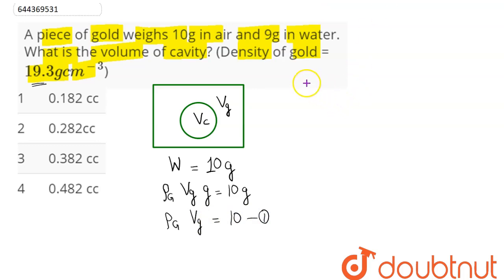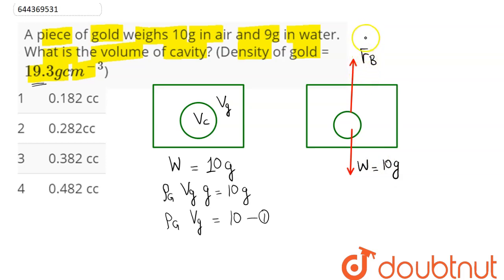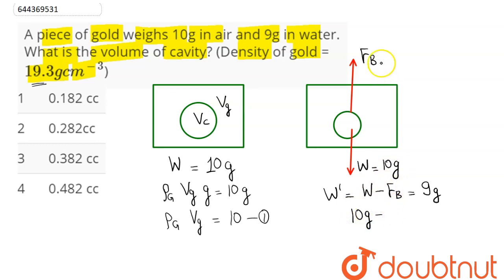When the whole setup is immersed in water, the buoyancy force acts upward (upthrush) and weight acts downward. The apparent weight equals 9g. So the true weight of 10g minus the buoyancy force Fb equals the apparent weight of 9g.